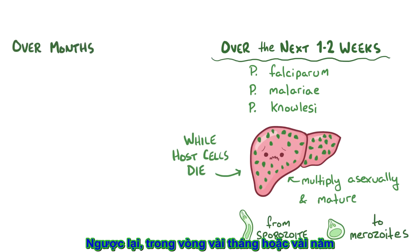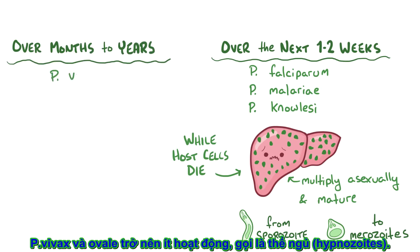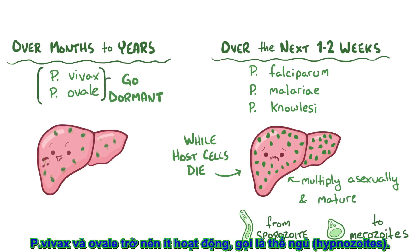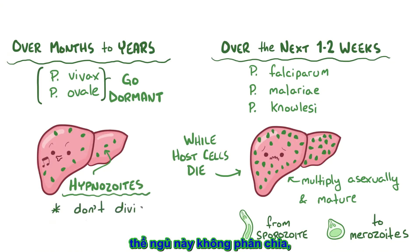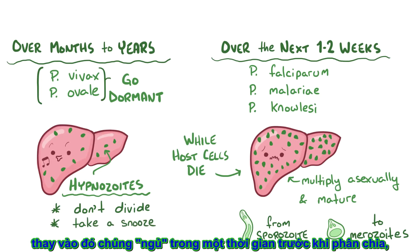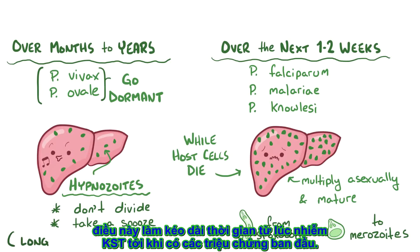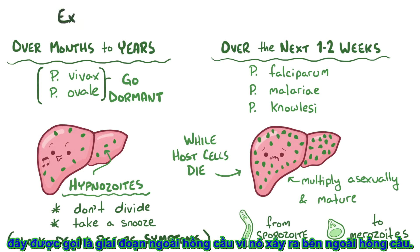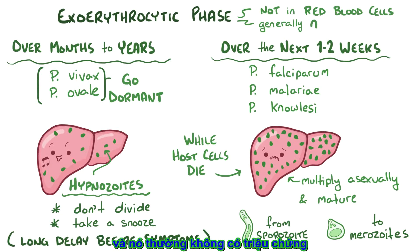In contrast, over the next few months to years, Plasmodium vivax and Plasmodium ovale sporozoites enter into a dormant hepatic phase where they're called hypnozoites. Hypnozoites don't divide. Instead, they snooze for a period of time before entering the process of schizogony, causing a long delay between the initial infection and symptoms from the disease. This is called the exoerythrocytic phase because it happens outside of the erythrocyte, or red blood cell, and it's generally asymptomatic.